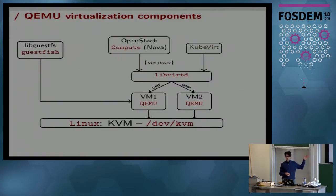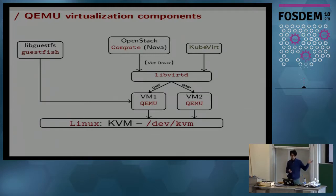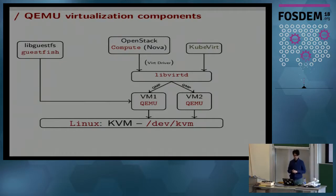That's a typical KVM virtualization stack. You can see at the bottom the Linux kernel module KVM, exposed as a character device to QEMU, which operates it via IOCTLs. Sitting on top is QEMU, which runs your guest as a complete process, just like any other process on your host. So QEMU exists alongside those processes, and you can use regular tools like top, ps, and so forth to monitor the various details.